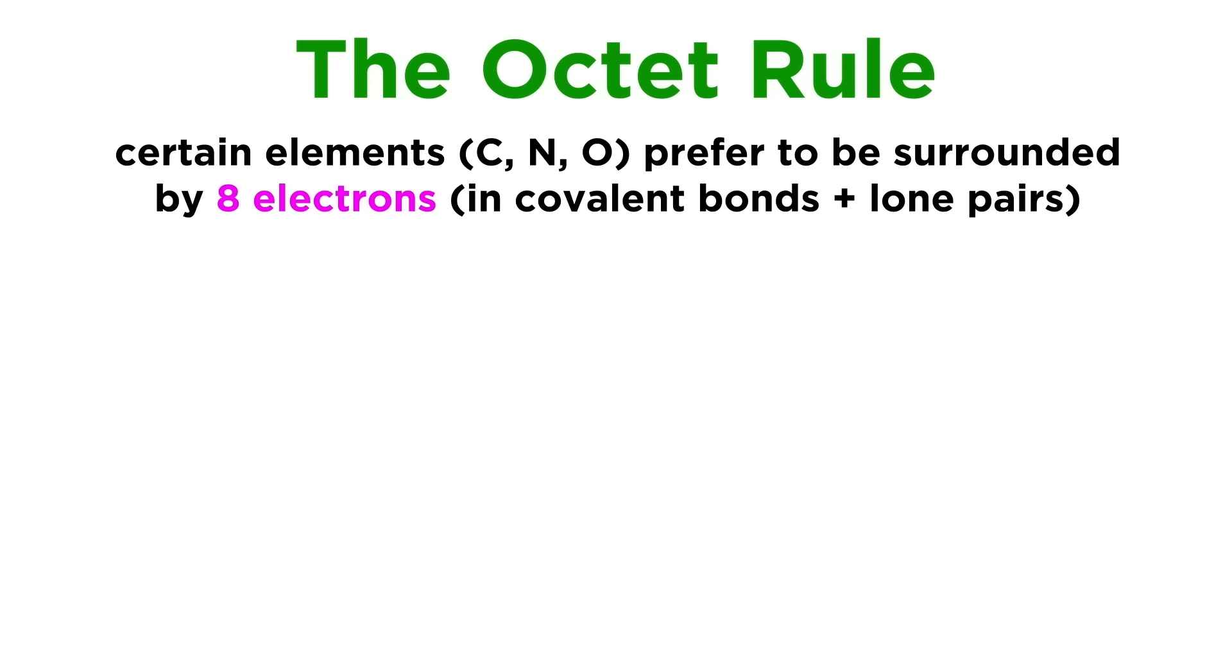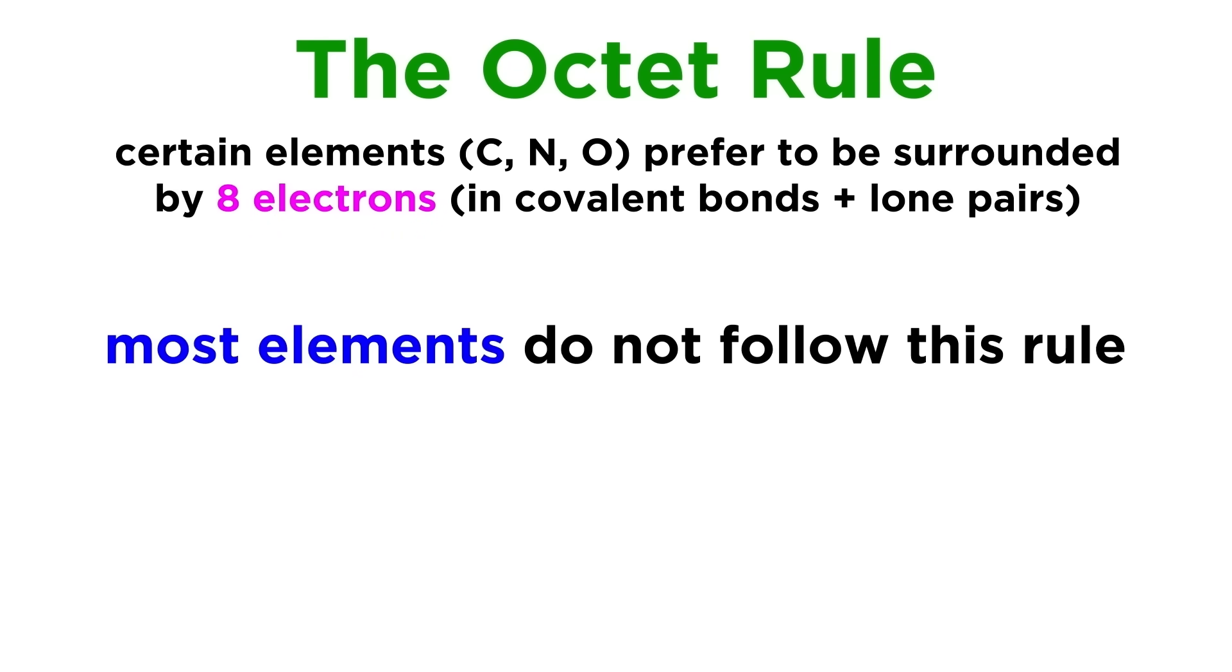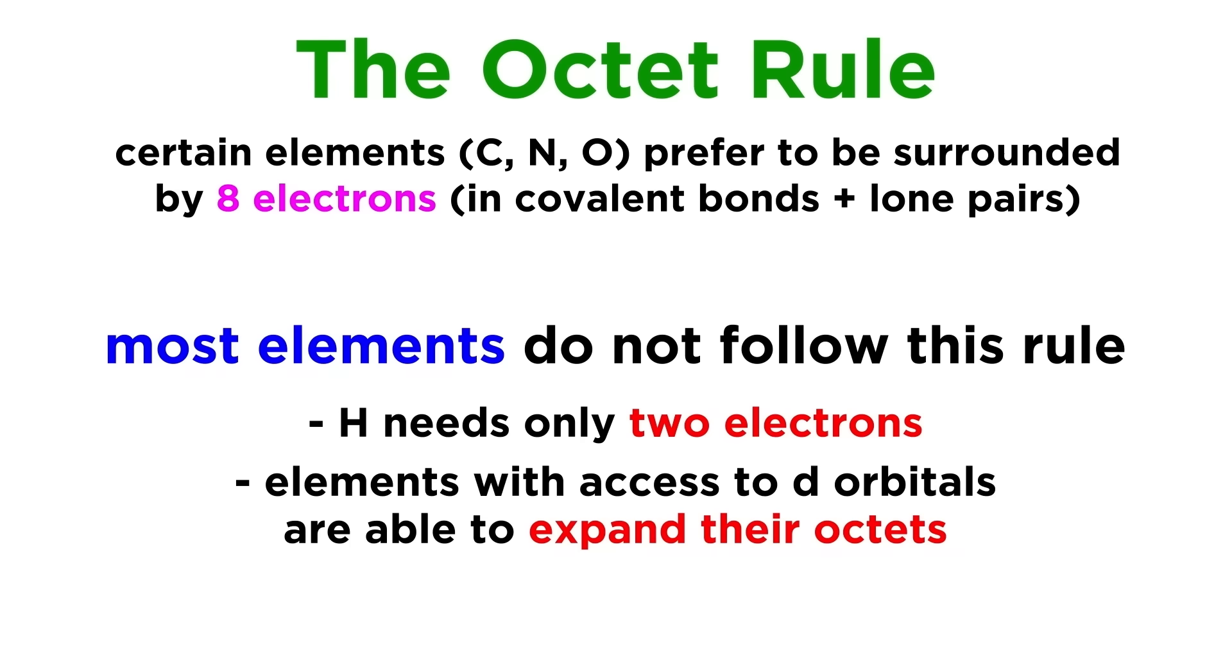So these few elements we just mentioned will tend to follow the octet rule, and this will be a good guideline when considering these elements. Later we will see that most other elements will not follow the octet rule, like the way that hydrogen only needs two electrons to be satisfied,